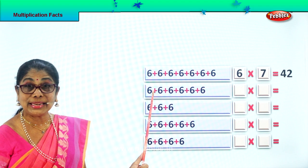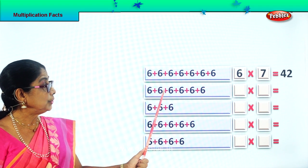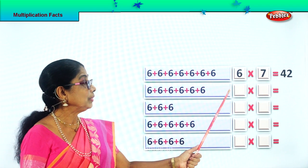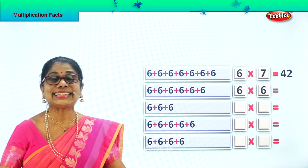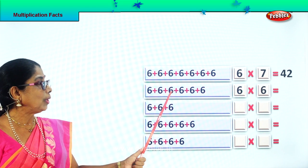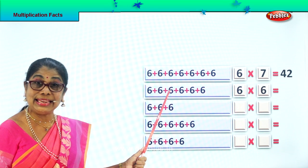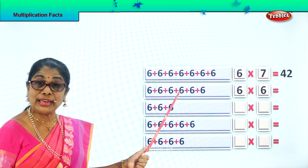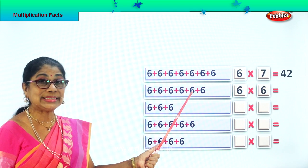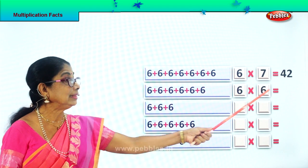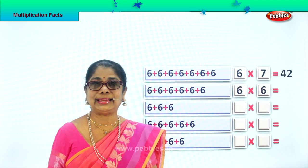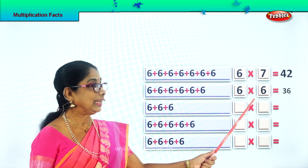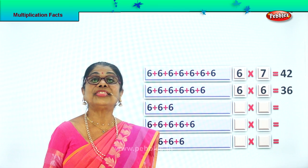Now let's look at this. 6 how many times? 1, 2, 3, 4, 5, 6. Six times. 6 plus 6 is 12. 12 plus 6 is 18. 18 plus 6 is 24. 24 plus 6 is 30. 30 plus 6 is 36. 6 into 6 is 36. That's a multiplication fact. 6 sixes are 36.